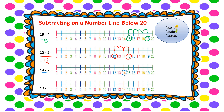Next: 14 take away 7. Find 14 and jump backwards 7 spaces: 1, 2, 3, 4, 5, 6, 7. We've landed on 7, so 14 take away 7 equals 7. Last question: 13 take away 3. Start at 13, jump back 3 spaces: 1, 2, 3. We've landed on 10, so 13 take away 3 equals 10.